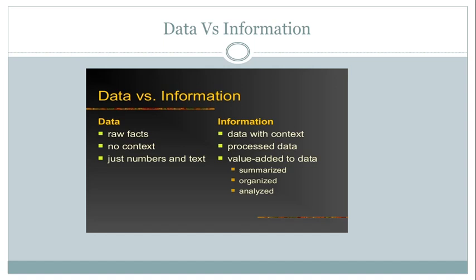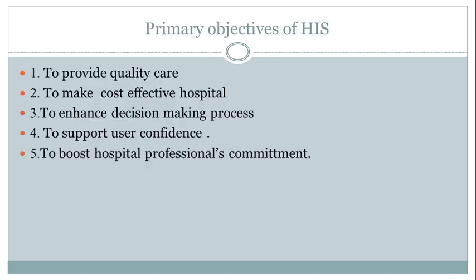I think now you can understand the difference between data and information. Now we will see what are the primary objectives of healthcare information systems. First is to provide quality care. Second, to make a cost-effective hospital. Third, to enhance the decision-making process. Fourth, to support user confidence. And fifth, to boost hospital professionals' commitment.